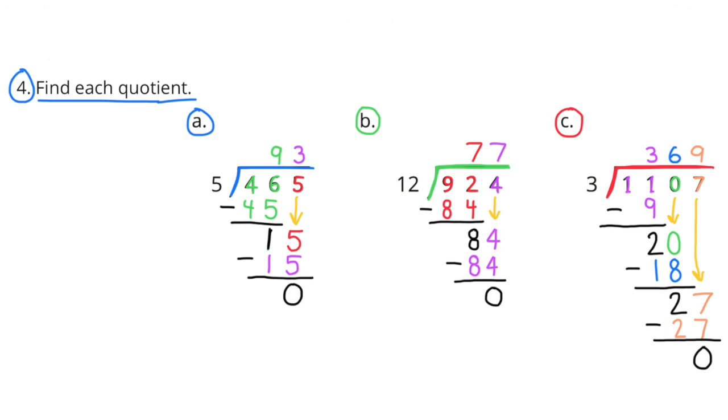9 times 3 is 27. 27 minus 27 equals 0. So, 1107 divided by 3 equals 369. You can always check your work by doing 369 times 3, and that should get you 1107.